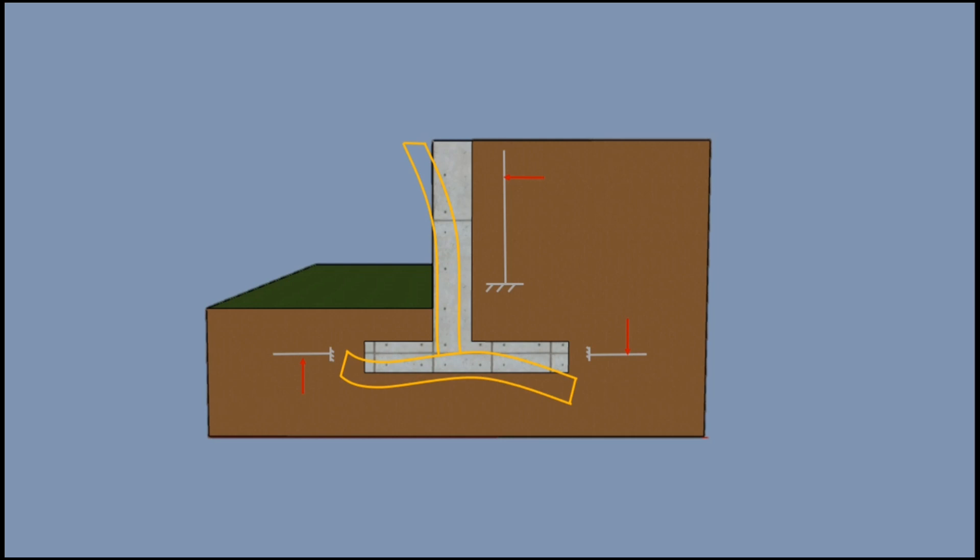The heel slab acts as a horizontal cantilever under the combined action of the weight of the retained earth from the top and the soil pressure acting from the soffit. The toe slab also acts as a cantilever under the action of the soil pressure acting upward.